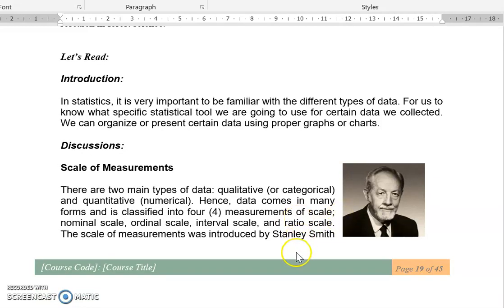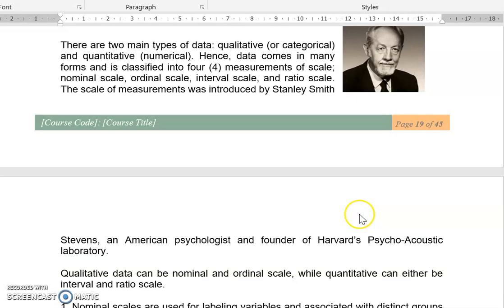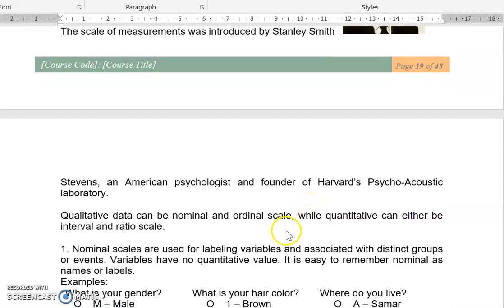Now, the scale of measurement was introduced by Stanley Smith Stevens, an American psychologist and founder of Harvard's Psycho-Acoustic Laboratory. Now, qualitative data can be nominal and ordinal scale, while quantitative can either be interval and ratio scale.